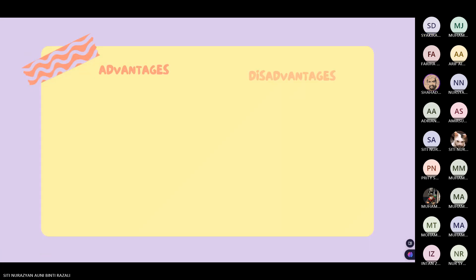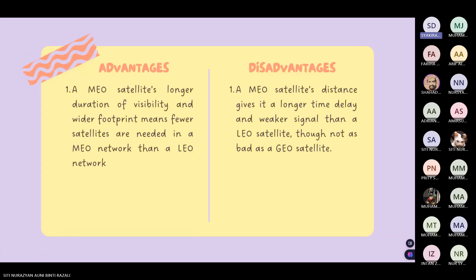The advantages of MEO satellites: their longer duration of visibility and wider footprint means fewer satellites are needed in a MEO network than in an LEO network. The disadvantage is that a MEO satellite's distance gives it a longer time delay and weaker signal than a LEO satellite, though not as bad as a GEO satellite.